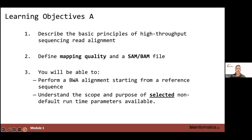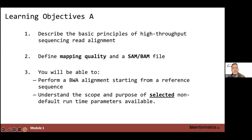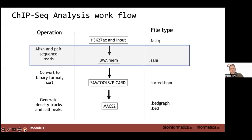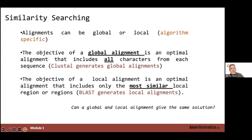The learning objectives of this module are to get into more conceptual details around sequence alignment, define mapping quality — which is different from base quality but scored on the same scale — go into more detail on the SAM/BAM file, perform a basic BWA alignment, and understand the scope and purpose of selected non-default runtime parameters.